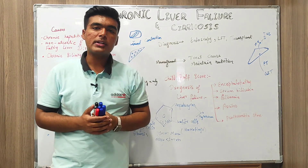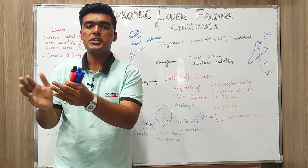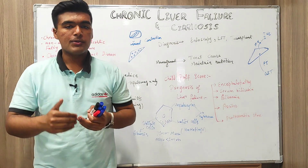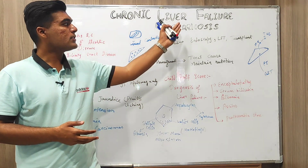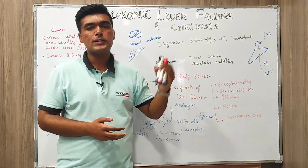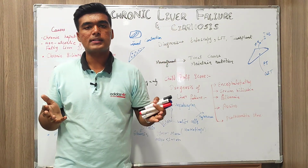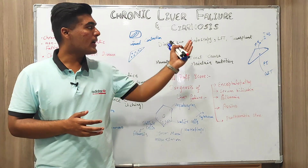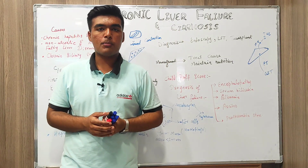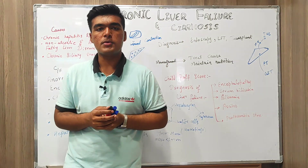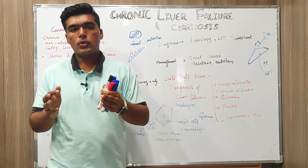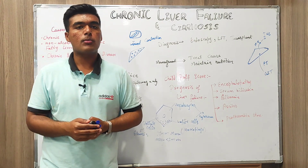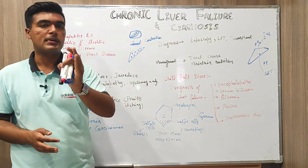When we talk about chronic liver failure, it is a progressive deterioration of liver for more than six months — deterioration means worsening of condition. Cirrhosis is not a disease; it is basically a complication which can develop in many diseases. We define it as diffuse fibrosis of liver surrounded by nodule formation.